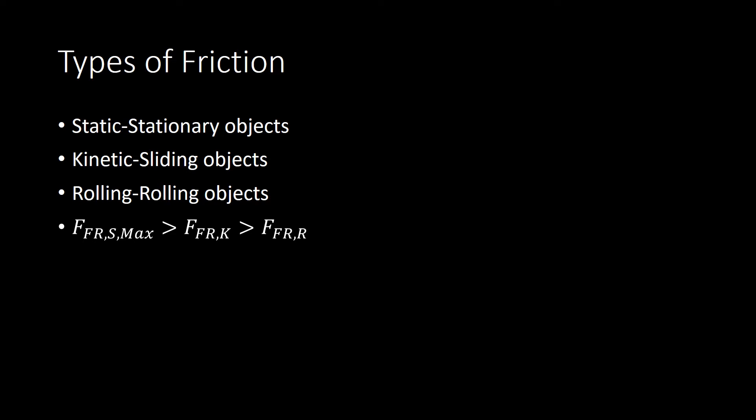But how would we think about those actual values of each of those forces? Well, they have essentially the same model, and that is simply that the force due to friction is less than or equal to some constant, which we call the coefficient of friction, times the normal force.